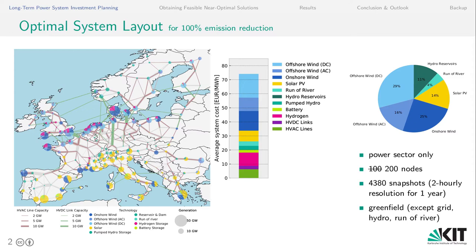So is there a problem with this solution? It is, after all, the cost-optimal solution within the model boundaries. The answer is yes, because there are soft factors such as social constraints and public acceptance, which we typically do not model. The topic of this presentation is to look beyond this cost-optimal solution and see whether there are similarly costly but technologically very diverse solutions, which might exhibit other favorable features.